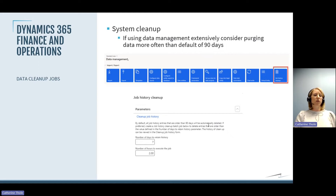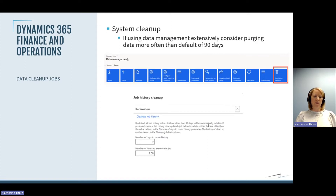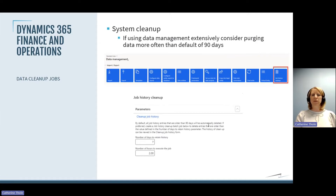Unlike the previous cleanup where you set the number of records to delete at a time, this setting controls how long you want the job to run before it ends. So a value of two would mean you want it to run for two hours. I wouldn't probably go much more than two hours.